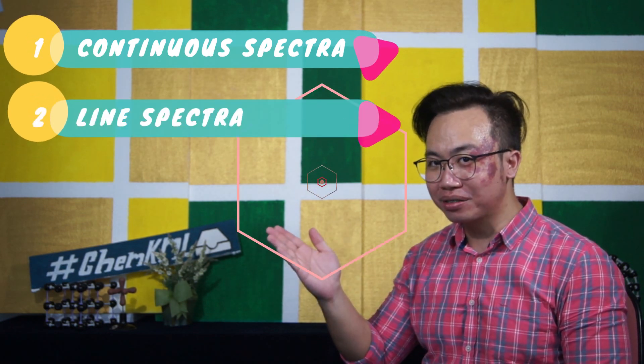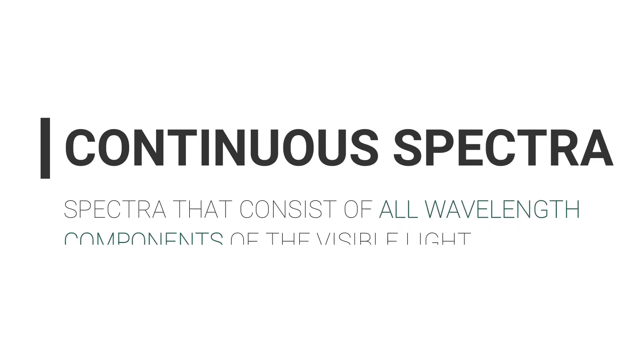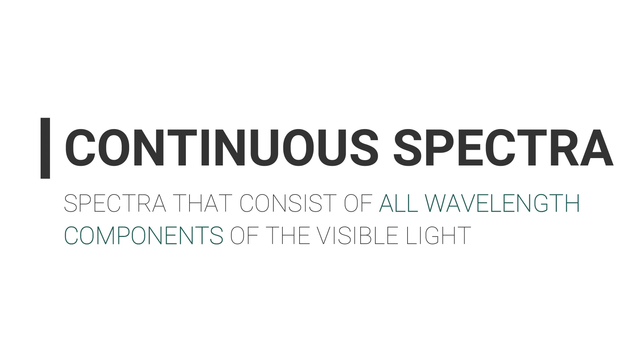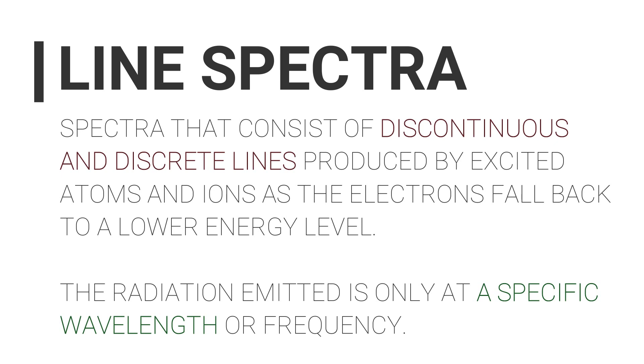In this video we're going to learn about emission spectra. There are two types of spectra you need to know: the first one is continuous spectrum, and the second one is line spectra. Continuous spectra consist of all wavelength components of visible light. Line spectra consist of discontinuous and discrete lines produced by excited atoms and ions as electrons fall back to a lower energy level — radiation is emitted only at a specific wavelength or frequency.